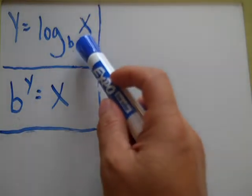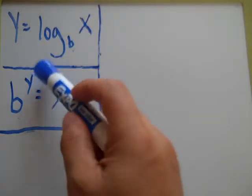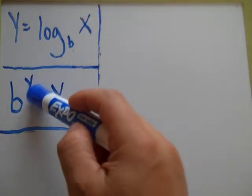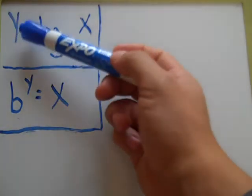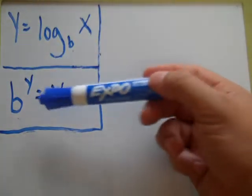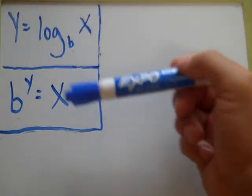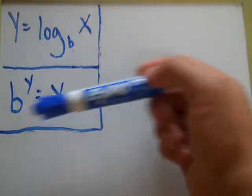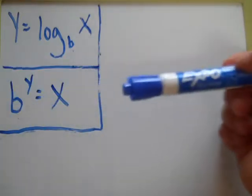So, base to whatever exponent y, y is always your exponent and it is up here too, equals x. And x is just whatever this is right here, it's equal to whatever that is.